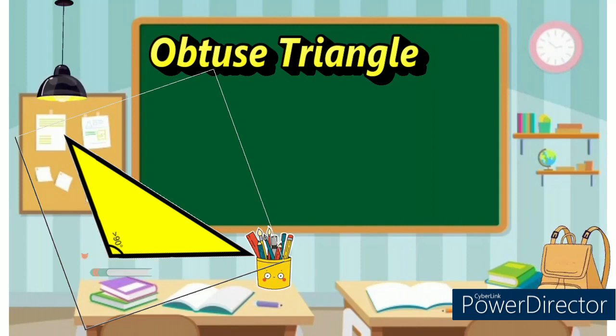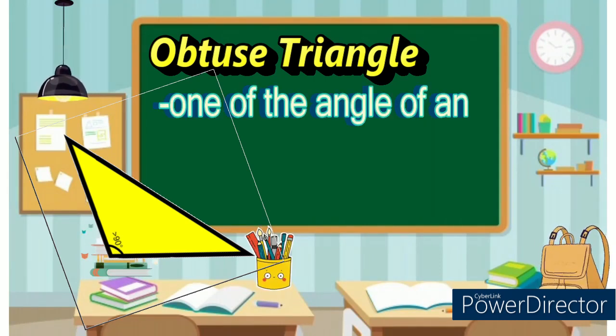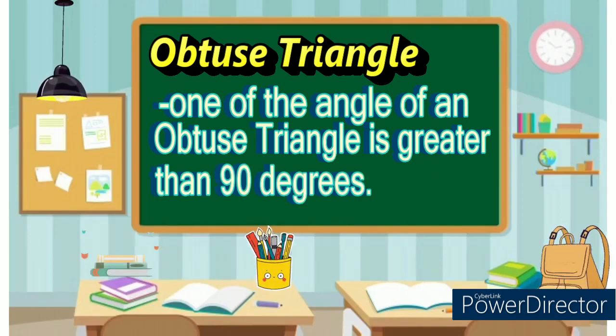Next, obtuse triangle. One of the angles of an obtuse triangle is greater than 90 degrees.